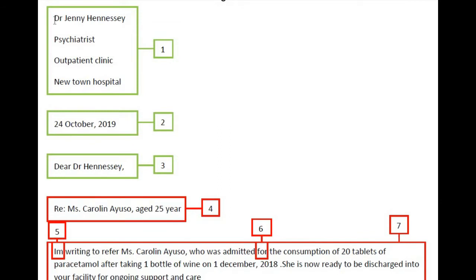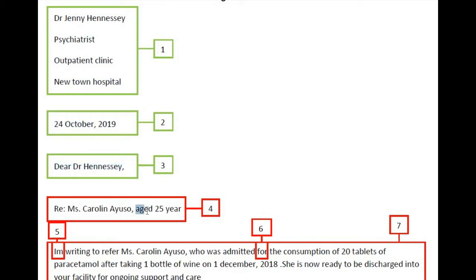The address, date, and salutation are written correctly. Moving to the reference, the writer could have written it better. While writing the reference, we don't have to write the word 'aged.' Instead, we can simply say '25 years.' Also, the candidate used the word 'year' which is wrong — it should be 'years.' So we can write 'RE:' then place a colon and write 'Ms. Carolyn Ayuso, 25 years.' This is the correct way to write a reference.